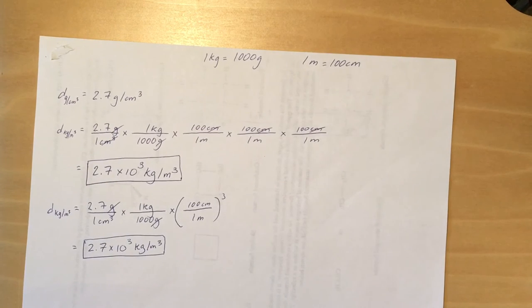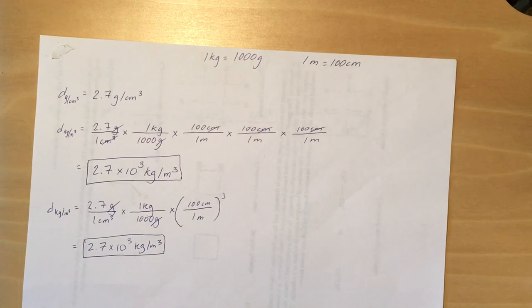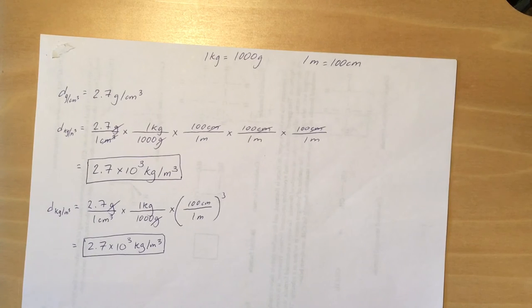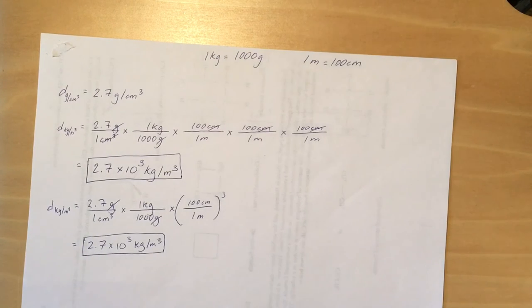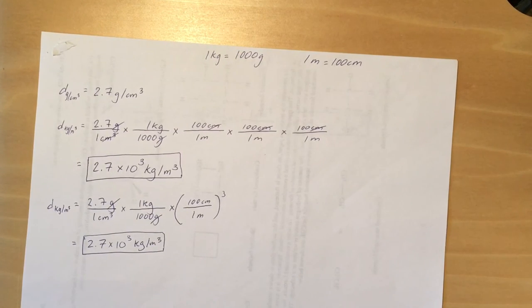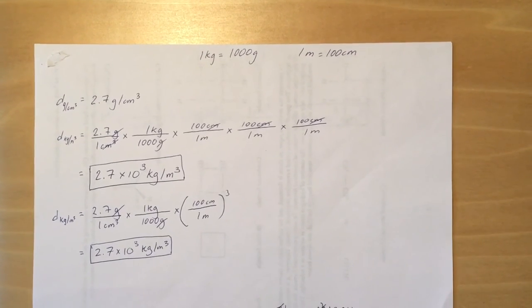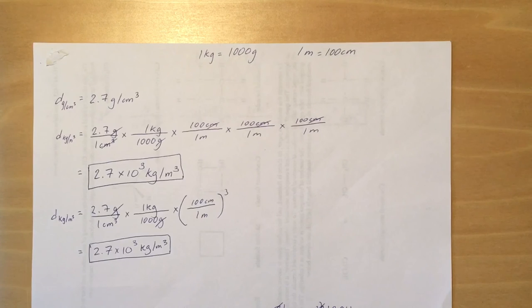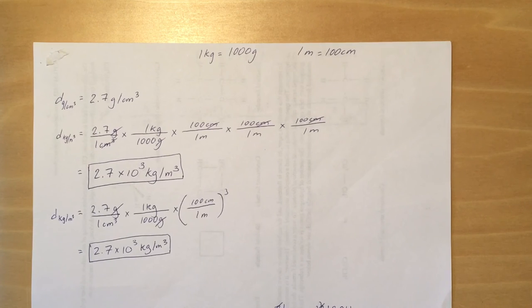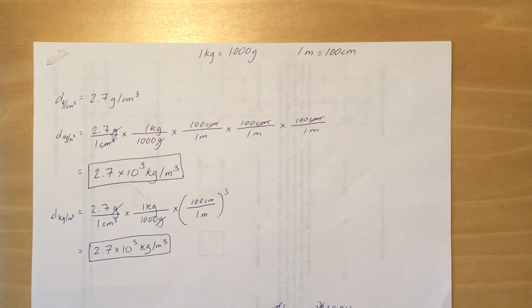When you multiply all that out, you get 2.7 times 10 to the third kilograms per meter cubed. In order to do it the quicker way, so you don't have to write all those centimeters per meters per meters conversion factors, you can just cube the entire conversion factor, 100 centimeters over one meter, and then cube that whole thing. As you see, you get the same answer.